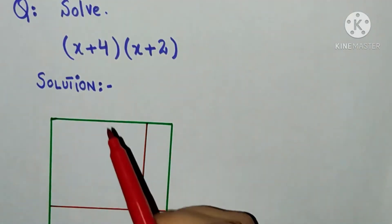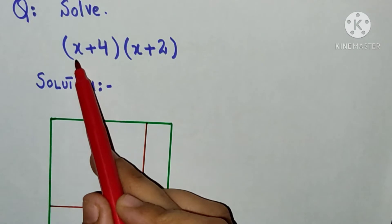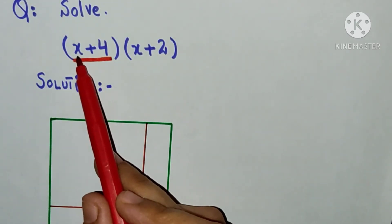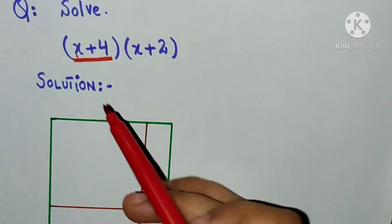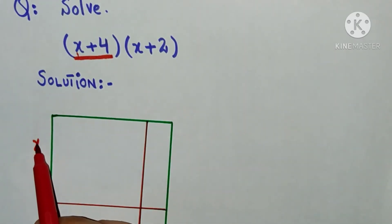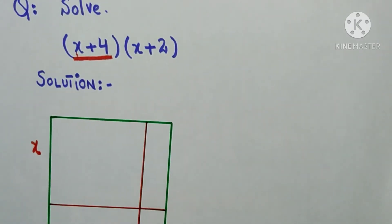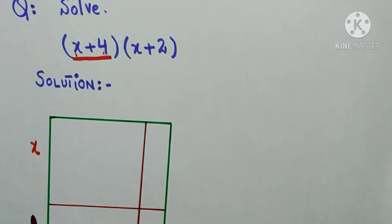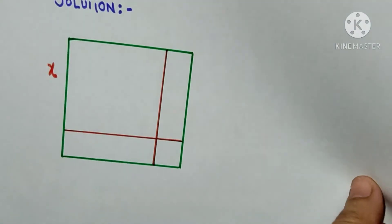I have a question here, x+4 in the very first bracket. So what I will do is I will take x and write x over here. I have 4, I will write 4 here in this bar.